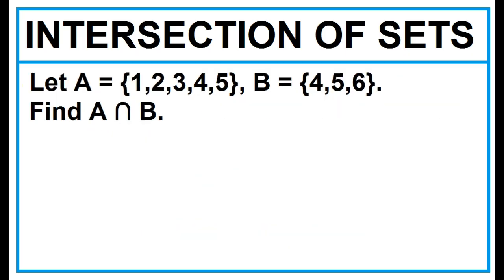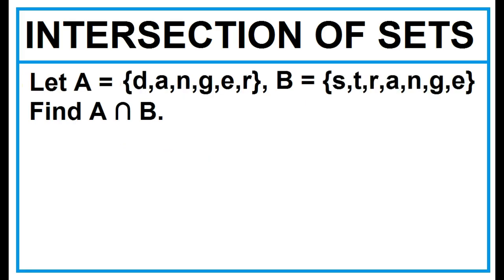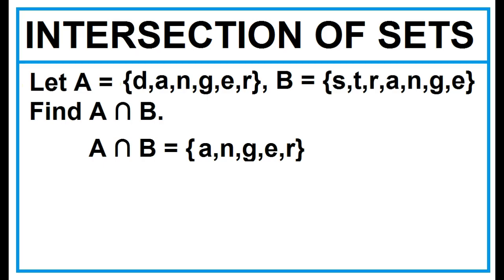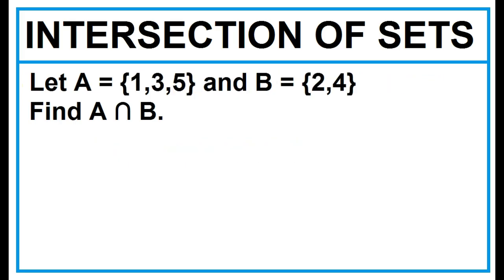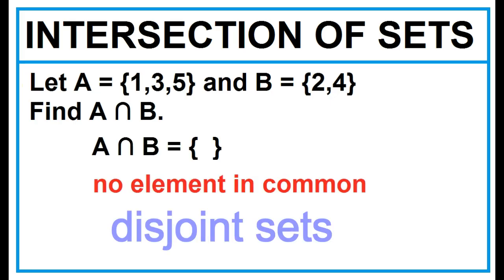Example: Given Set A and Set B, find A intersection B. What are the elements common to Set A and Set B? A intersection B contains the elements A, N, G, E, R. Another example: Given Set A and Set B, find A intersection B. Since there is no element common in Set A and Set B, the answer is an empty set.